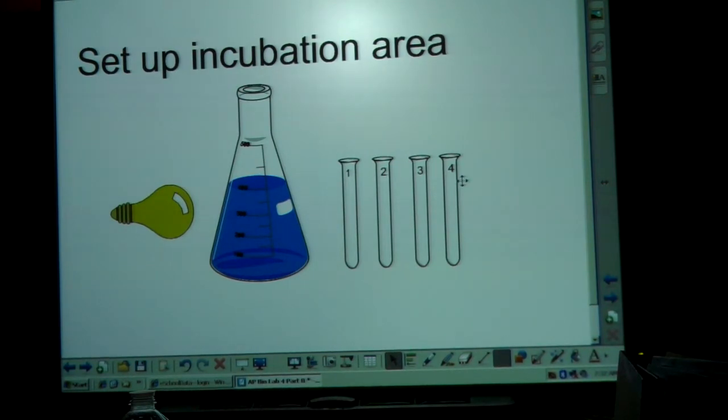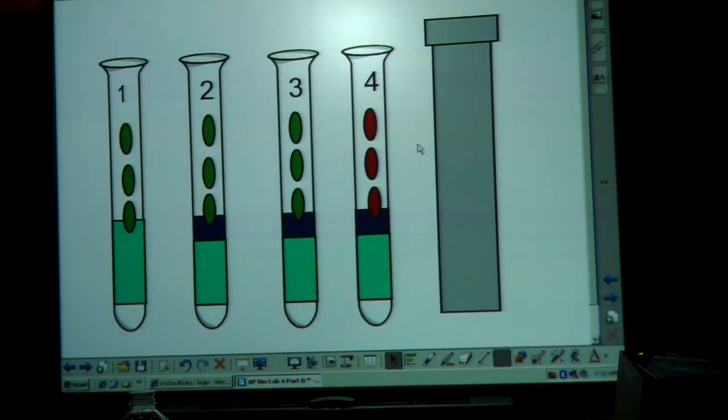Alright, so what you need to do here, you also need to get some aluminum foil ready to go for test tube number two. I'll talk about that in a second. And then what we're going to do here is in the four test tubes, test tube one, this is according to the lab, is going to get one milliliter of the phosphate buffer, four mils of distilled water, and then three drops of the spinach extract, the unboiled extract.